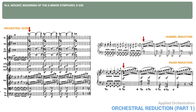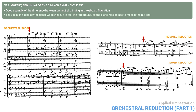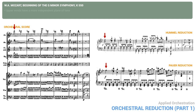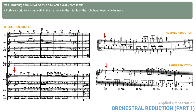Now let's look at another tutti, measure 34 and following. This is a good example of the difference between orchestral thinking and keyboard figuration. Here the main line is in the violins in octaves, the bass line is played by cellos and basses, and the woodwinds and horns provide rich sustained harmony in the background. Note that here the violin line is below the upper woodwinds, but it's still the foreground, so the piano version has to make it the top line. The harmony must again be compressed into the lower register with full chords in the left hand. Power, for some reason, lowers the left hand by an octave in measure 36, which acts a bit like a crescendo, although there is none indicated in the original. Starting in measure 38, the upper winds have a more independent plane of tone, harmonically complete in itself. Both transcriptions simply fill in the harmony in the middle of the right hand to provide fullness, and the piano pedal will also help to provide sustained resonance.